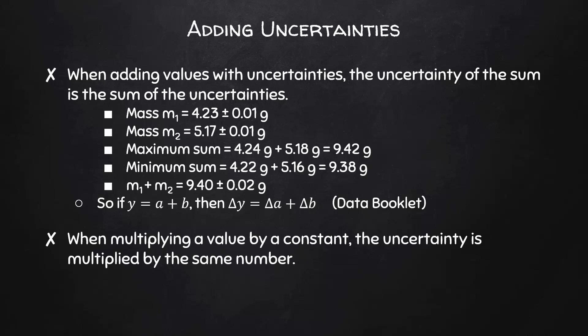When multiplying a value by a constant, the uncertainty is multiplied by the same number. So 2 times mass 1 would give us an uncertainty of 0.02 grams, 2 times 0.01. And one half of m2 would give us an uncertainty of 0.005, half of 0.01.